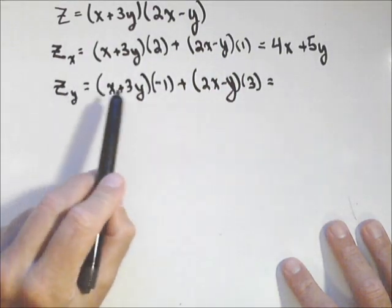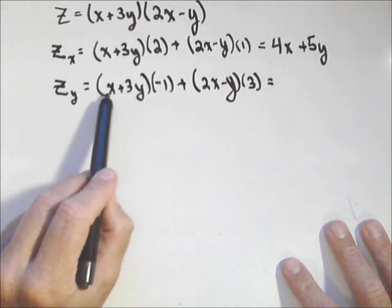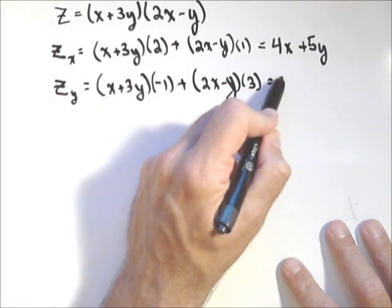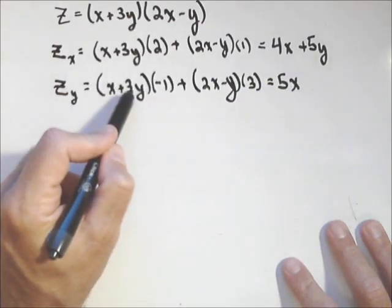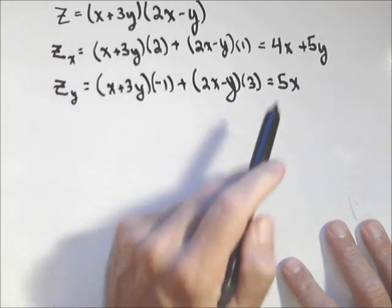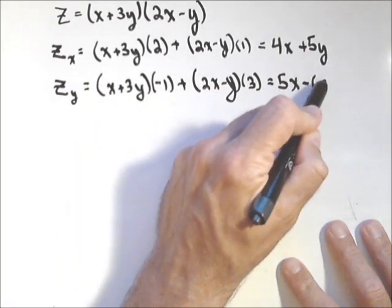So z sub y we're calling it, if we simplify, we'll have a negative x plus 6x, so 5x. A negative 3y minus another 3y is minus 6y.